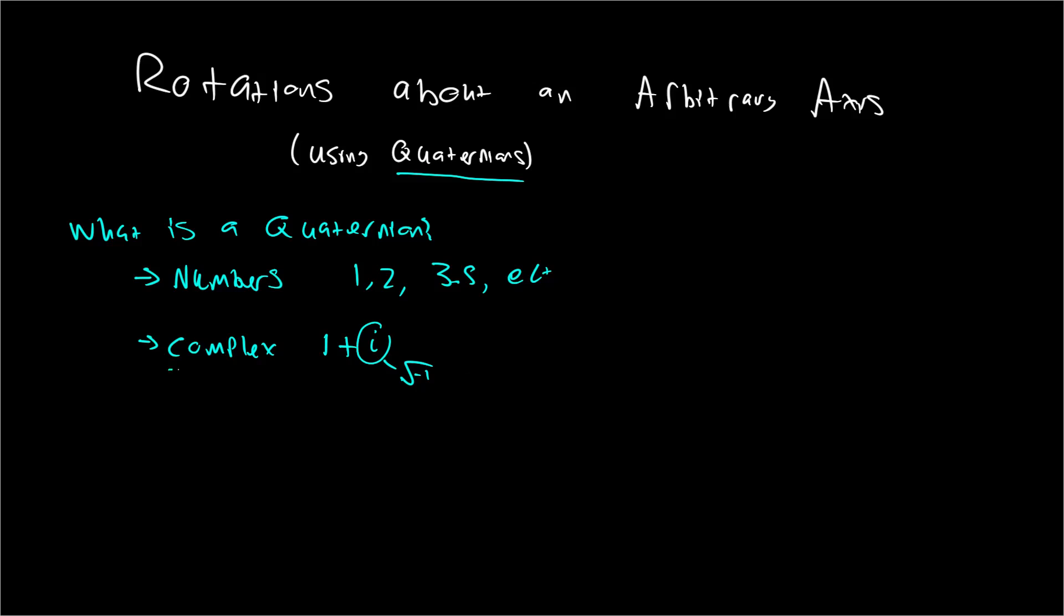So what are quaternions? Quaternions are an extension of this complex number field. Now, the person who basically invented quaternions tried to do like i, j. So 1 plus i plus j, but there was something missing, and it just didn't work.